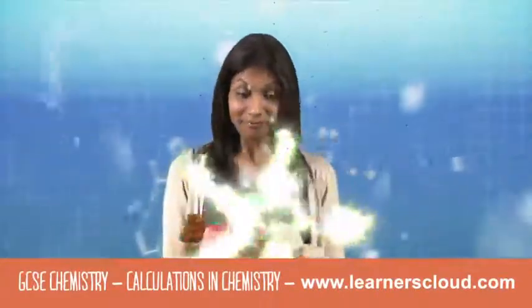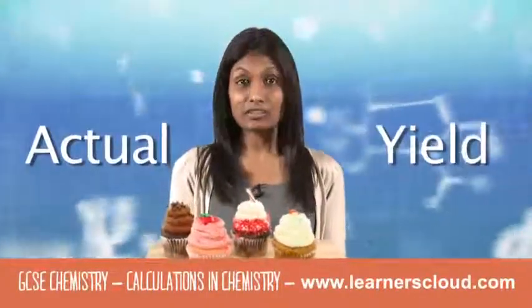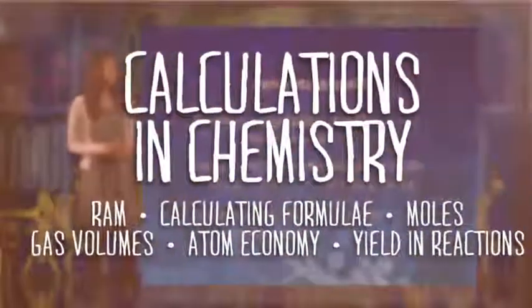Now the amount of product produced in a reaction is called actual yield. And you can use this equation to do this.